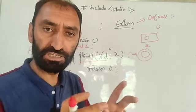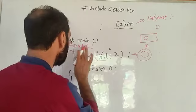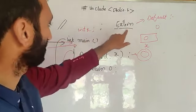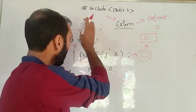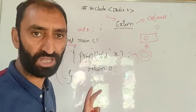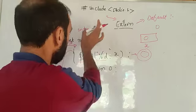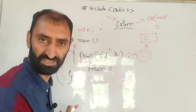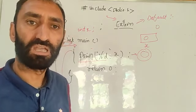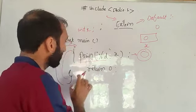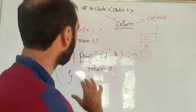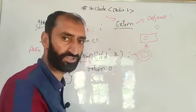Auto is the default storage class only for local variables. For global variables and global functions, the storage class is external. So the difference is: local variables default to auto, and variables declared outside all functions default to external. Now I will write a second program and discuss the working of that question as well.